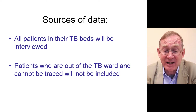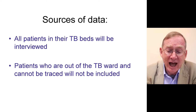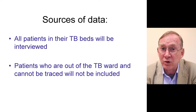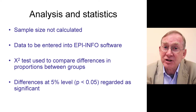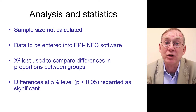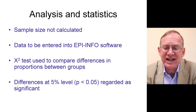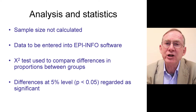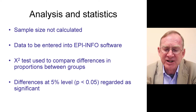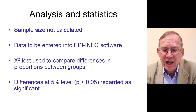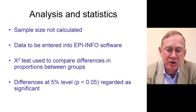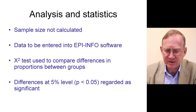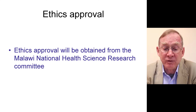Sources of data were patients in their beds who were interviewed. Any patients out of the TB ward who could not be traced were not included. Analysis and statistics: this is a national sample, so we did not calculate a sample size — we did the whole country. We entered data into EpiInfo software, used the chi-square test to compare differences in proportions between groups, and differences at the 5% level (P < 0.05) were regarded as significant. We obtained ethics approval from the Malawi National Health Science Research Committee.